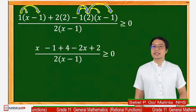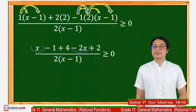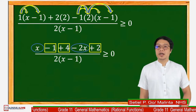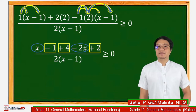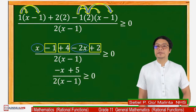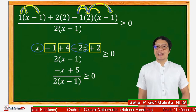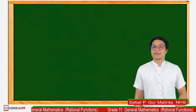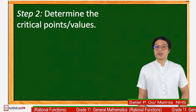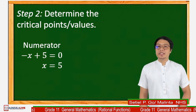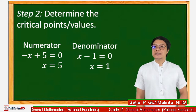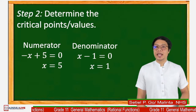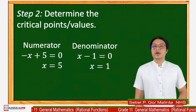Combining similar terms: x and −2x give −x, and the constants −1, +4, +2 give +5. So the resulting single rational inequality is (−x + 5) / [2(x − 1)] ≥ 0. Step 2: determine the critical points. Setting the numerator −x + 5 = 0 gives x = 5. Setting the denominator x − 1 = 0 gives x = 1.